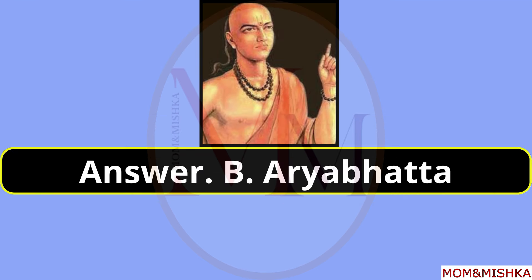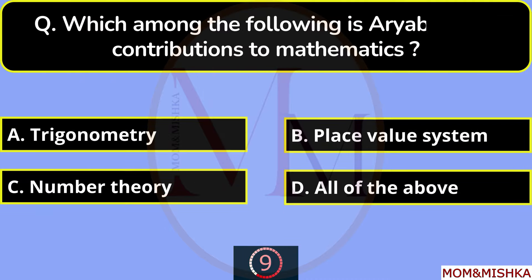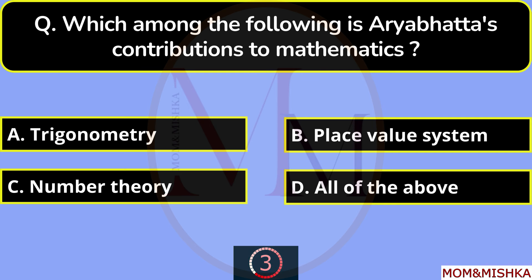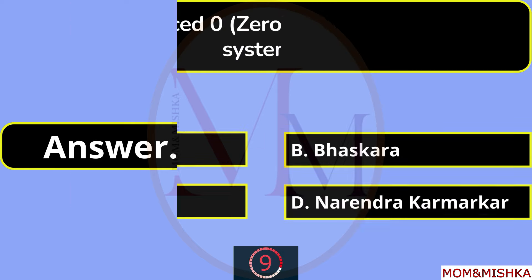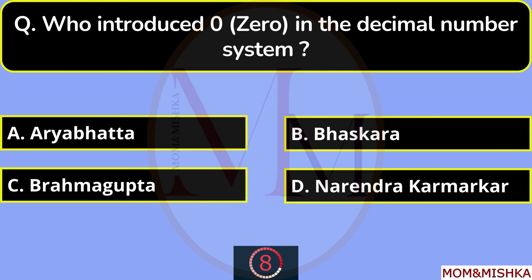Who among the following determined the value of pi correct to four decimal places? Aryabhata, option B. Which among the following is Aryabhata's contribution to Mathematics? It's all of the above, option D.